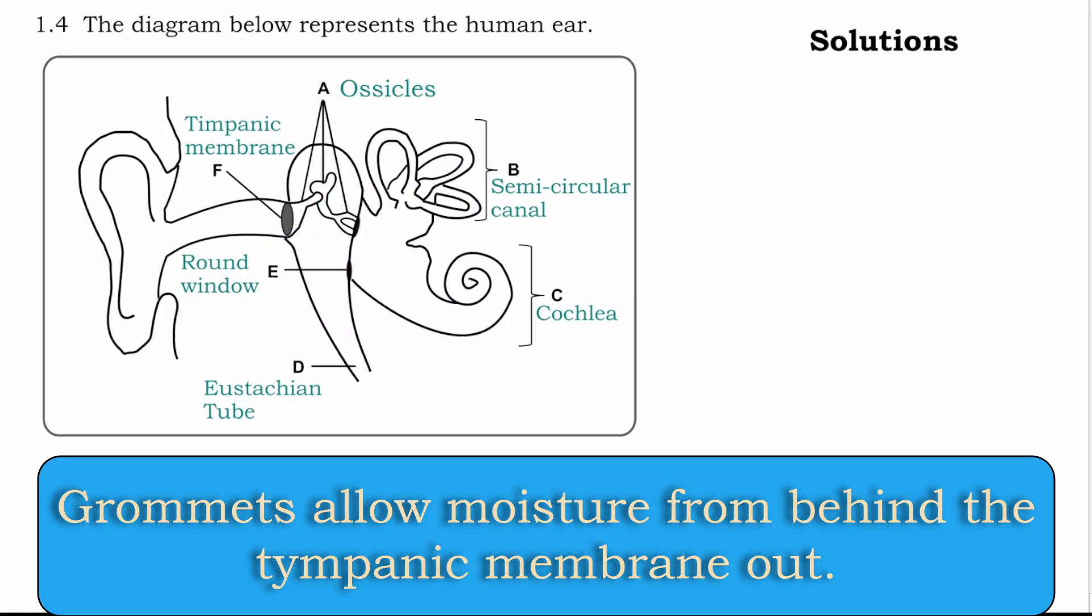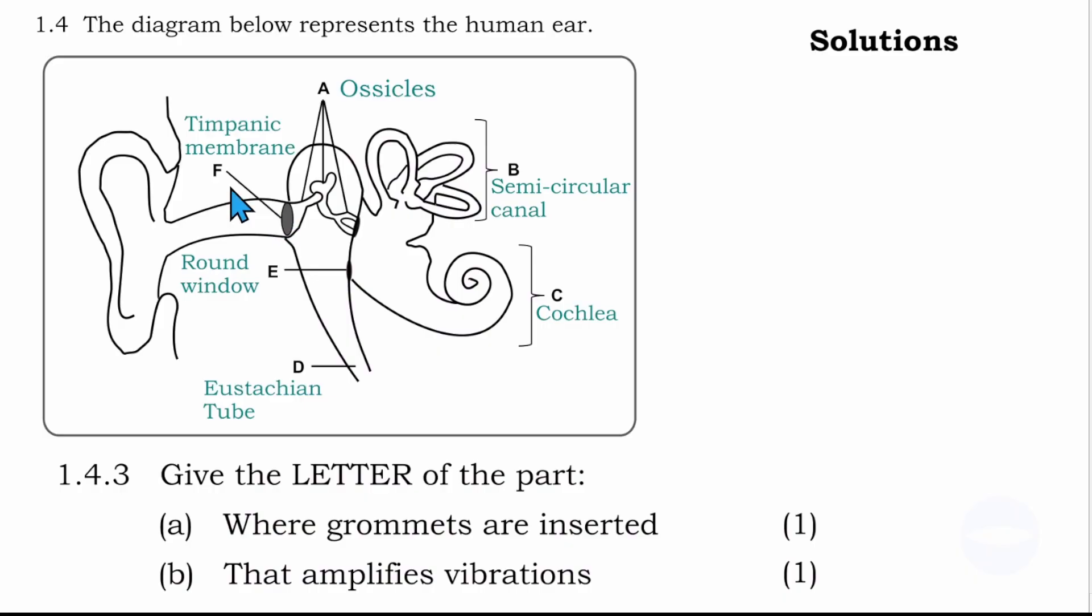The letter where the grommet is inserted is letter F, in the tympanic membrane. For question 1.4.3, number A: it's F, in the tympanic membrane. Because here they say only the letter, we don't write the name, we write only the letter.